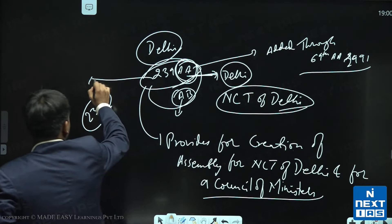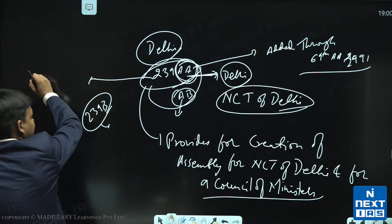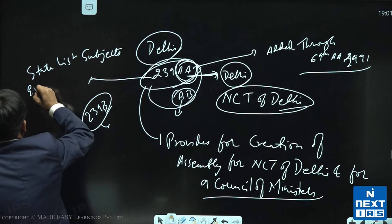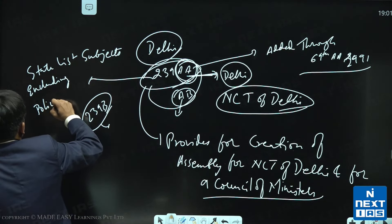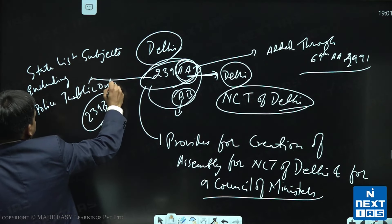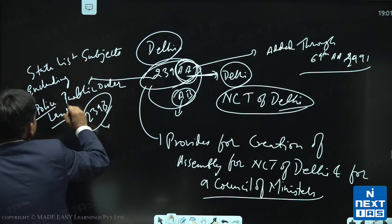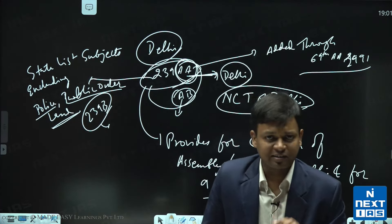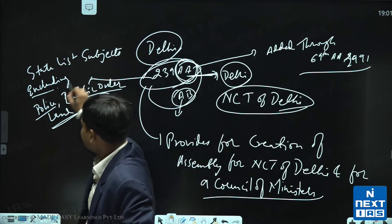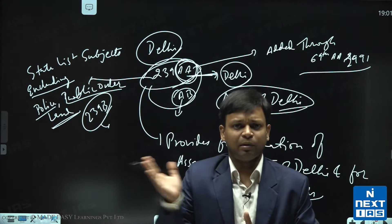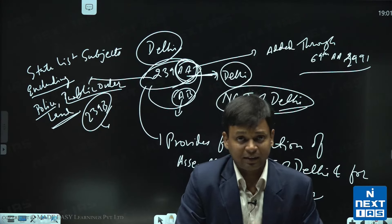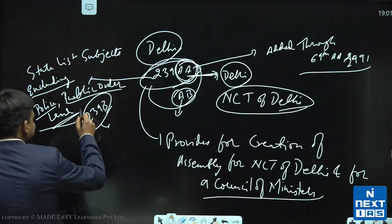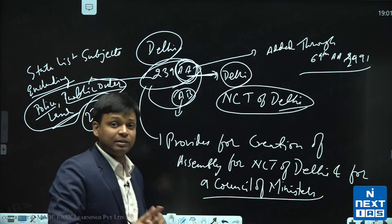Delhi has got subjects of the state list excluding police, public order and land. ये 3 subjects हैं जिस पर Delhi की assembly laws नहीं बना सकती हैं. बाकि सारे subject पर they can make laws on concurrent subject, parliament can make laws on concurrent subject also. But parliament can make laws on every subject including the state list subject also. Normally Delhi की assembly इन तीन सब्जेक को छोड़कर बाकि सब पर law बना सकती हैं, but parliament can make law on every subject of Delhi assembly also.